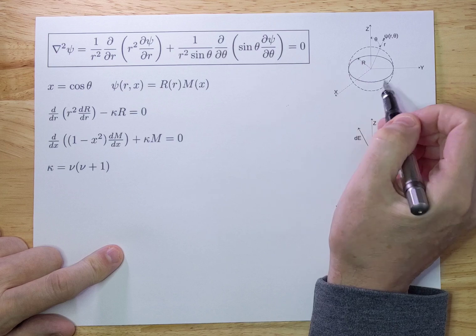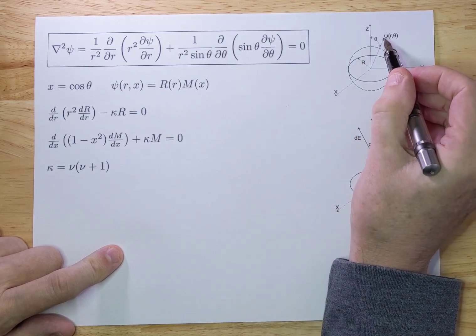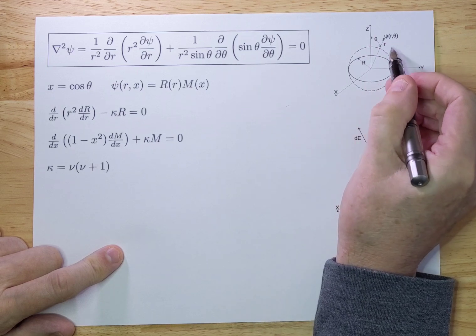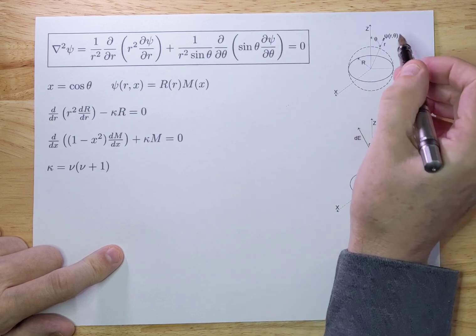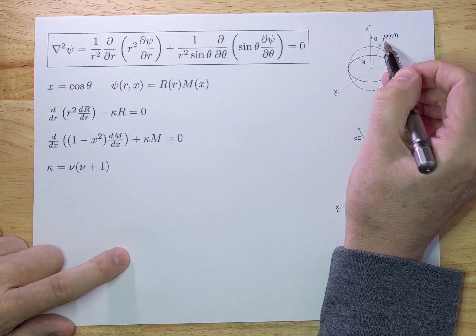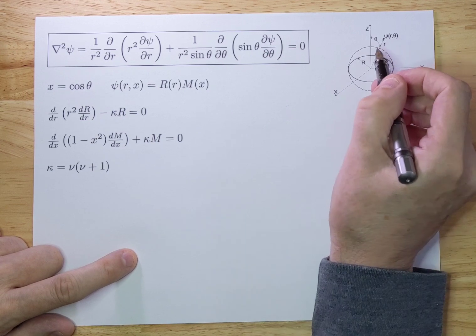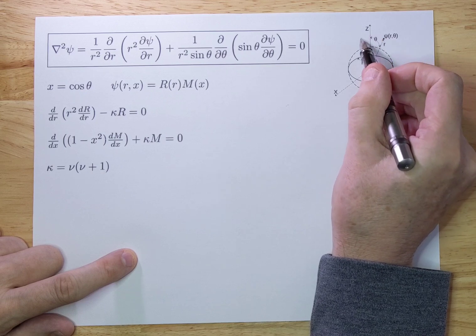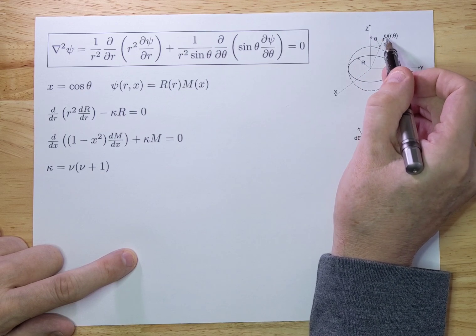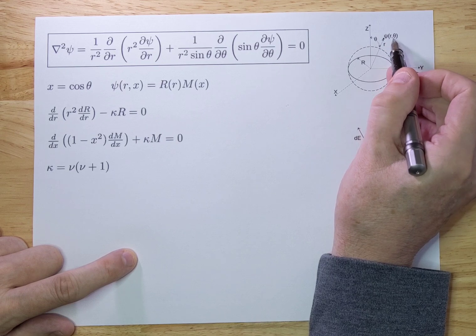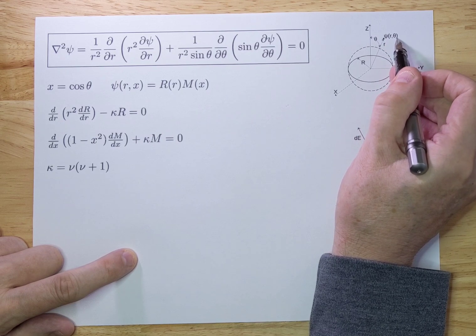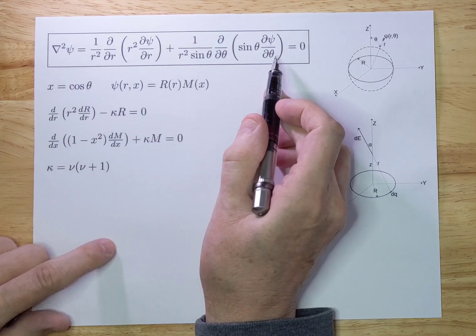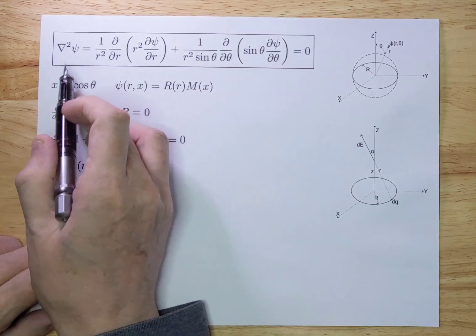This problem has axial symmetry because if you rotate around the z-axis, which is the axis of symmetry, you will see that the solution is always the same — for the potential as well as for the E field. So if you rotate around the z-axis, the solution of psi will be the same everywhere, and you don't have a phi angle if you go to spherical coordinates. In spherical coordinates with axial symmetry, the Laplace equation looks like this.